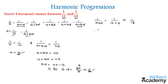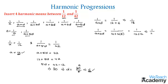The next term is 1/(a+2d). Substituting the values gives 1/(12 + 2×6) = 1/(12+12) = 1/24. So the third term is 1/24.